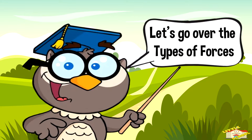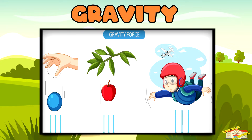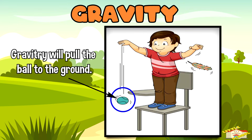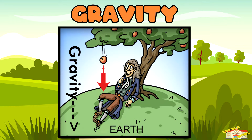Let's go over the types of forces. Gravity is a force that pulls objects towards each other. For example, gravity keeps us on the ground and makes apples fall from trees.